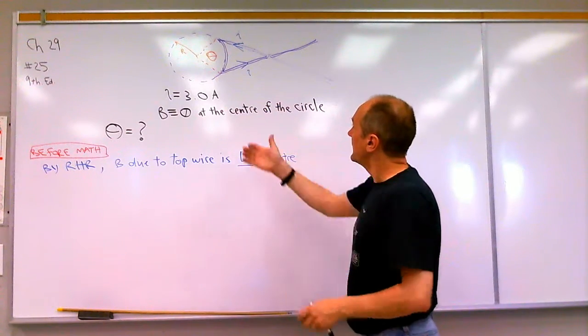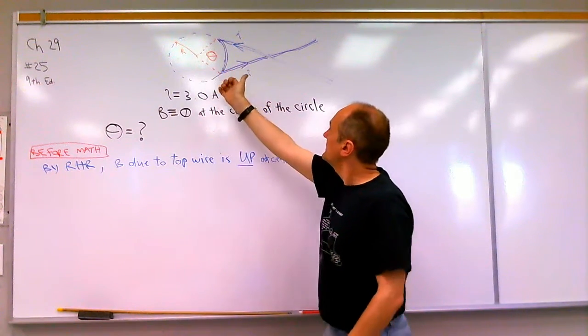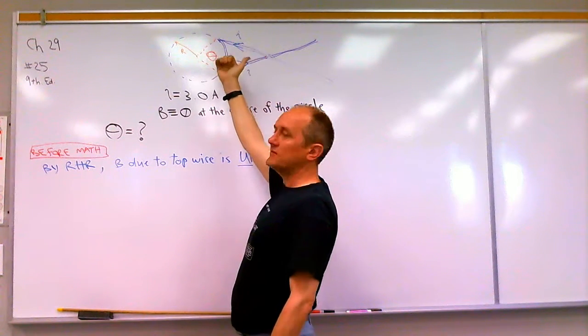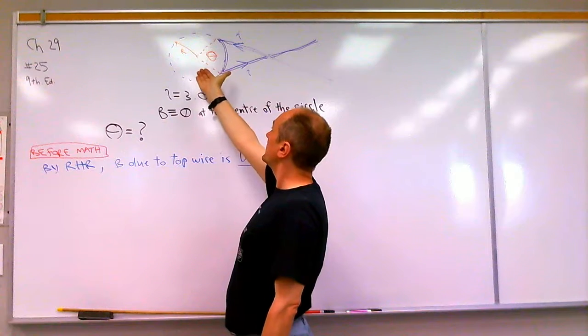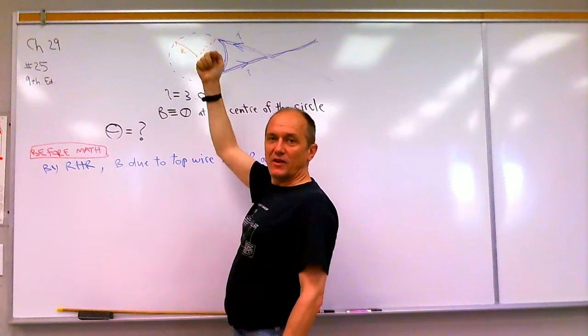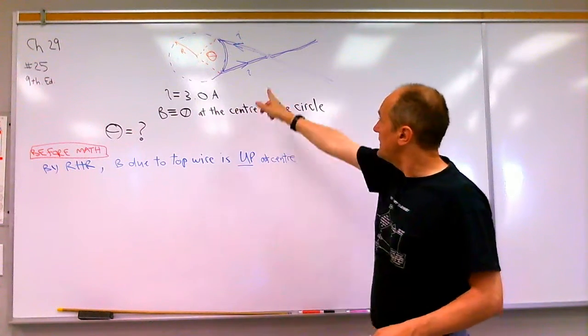Looking at this bottom one, again, if we put our thumb in the direction of the current flow, and then curl our fingers, then our fingers give us the direction of magnetic field. So again, at this end of the wire, we get that the field is coming up, again, due to the bottom wire.